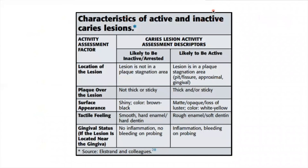I've included this slide for the purpose of understanding certain characteristics of active and inactive caries lesions. Caries lesion activity assessment indicates inactive or arrested caries when the lesion is not in a plaque stagnation area, where there is not much biofilm and not thick or sticky plaque around it. If the surface is shiny and the color is brown or black, the caries could be inactive or arrested. Tactile feeling reveals smooth or hard enamel and hard dentin — meaning the caries progression has stopped. No inflammation and no bleeding on probing is present near the gingiva.